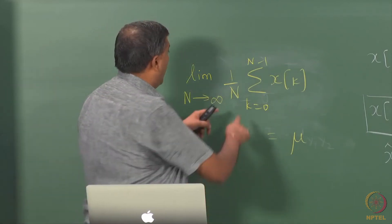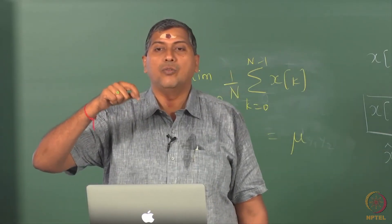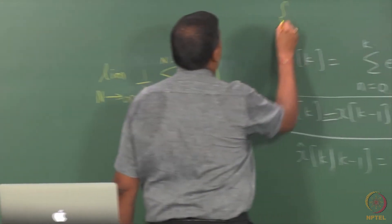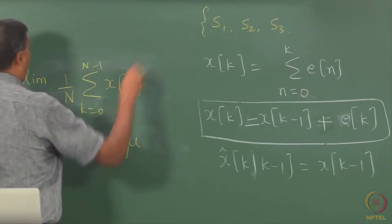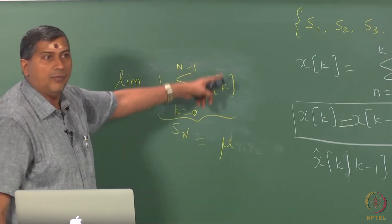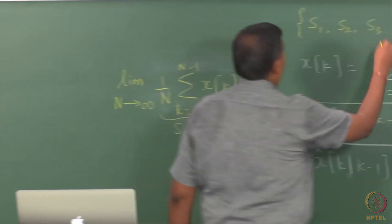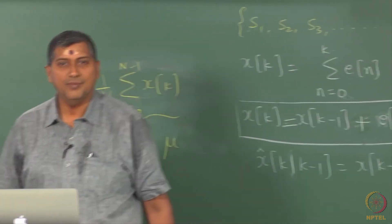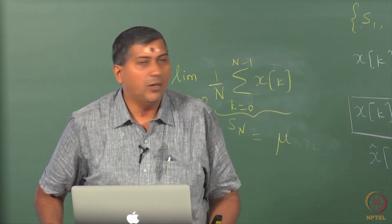So call each of those summations as Sn. So I have here S1, S2, S3 and so on. What is Si? Si or Sn is this summation here, this average 1 over n sigma xk. As I keep evaluating, it says ultimately I should hit mu.